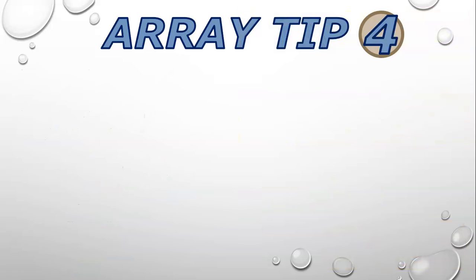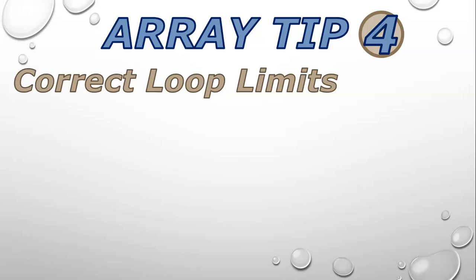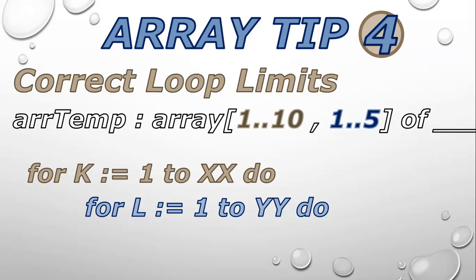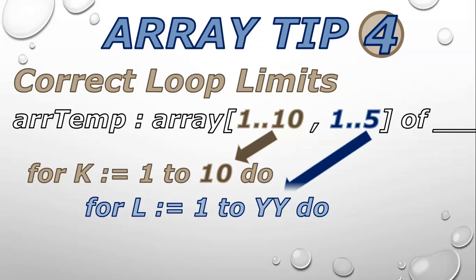Array tip number four: make sure that you use the correct loop limits. If you are using a loop from 1 to X and another from 1 to Y as your nested loop and you're not sure what those X and Y values must be, go look at the array declaration. There it will tell you, especially if those numbers are not the same. For example, if you see a 10 and a 5, the outer loop goes from 1 to 10 and the inner loop from 1 to 5. The array declaration gives you exactly what values to loop until, assuming the array starts at one.